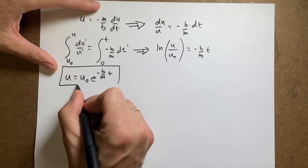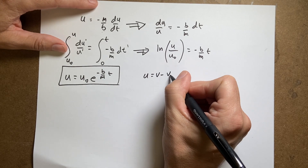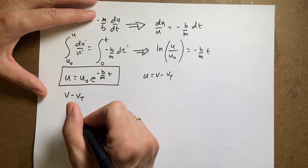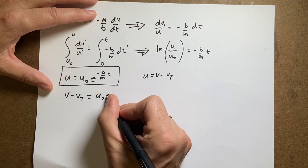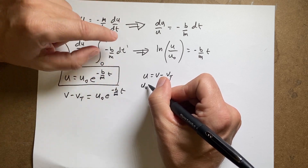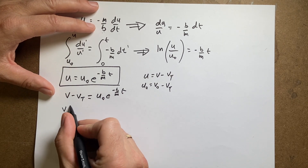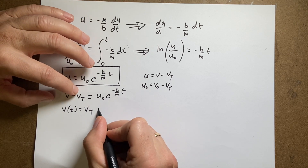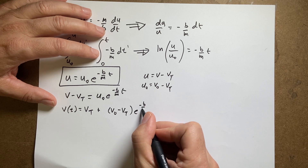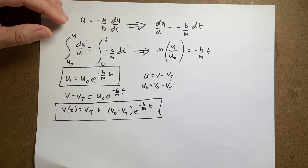Now I still need V. I said that U equals V minus VT, so let me plug that back in. I get: V minus VT equals U_zero times e to the negative (B/m)t. And U_zero at time t equals zero is V_zero minus VT. So adding VT to both sides, V as a function of time is: VT plus (V_zero minus VT) times e to the negative (B/m)t. That's a constant, and I'm pretty sure that's right.